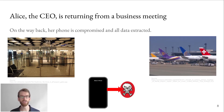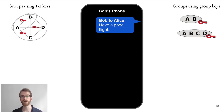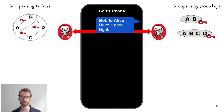Now let's say Alice, the CEO of a company, is returning from a business meeting. On the airport on her way back, her phone is compromised and all the data was extracted. From Bob's perspective, we return to the previous example where we have two groups: one consisting of A and B, and the other the company-wide group consisting of A, B, C, and D. While Alice is at the airport, Bob sends her a message: 'Have a good flight.' As you can see from the red skull and crossbones and the red keys, the adversary can actually read and decrypt that message because nothing has happened with the key material — the adversary has the right key material of the group A, B to decrypt that message.